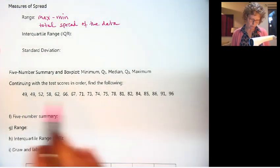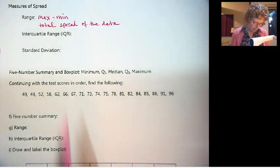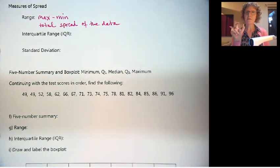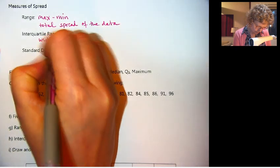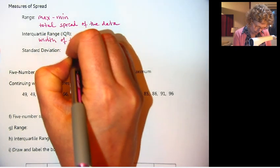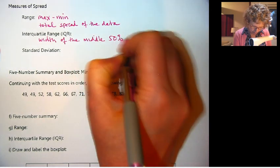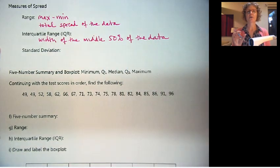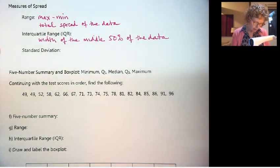After we define these, we'll go through with our test score example and calculate that. The interquartile range is the width of the middle half of the data, the middle 50%. So we're kind of ignoring the top quarter and the bottom quarter, and we're doing the middle two quarters, the middle 50%.